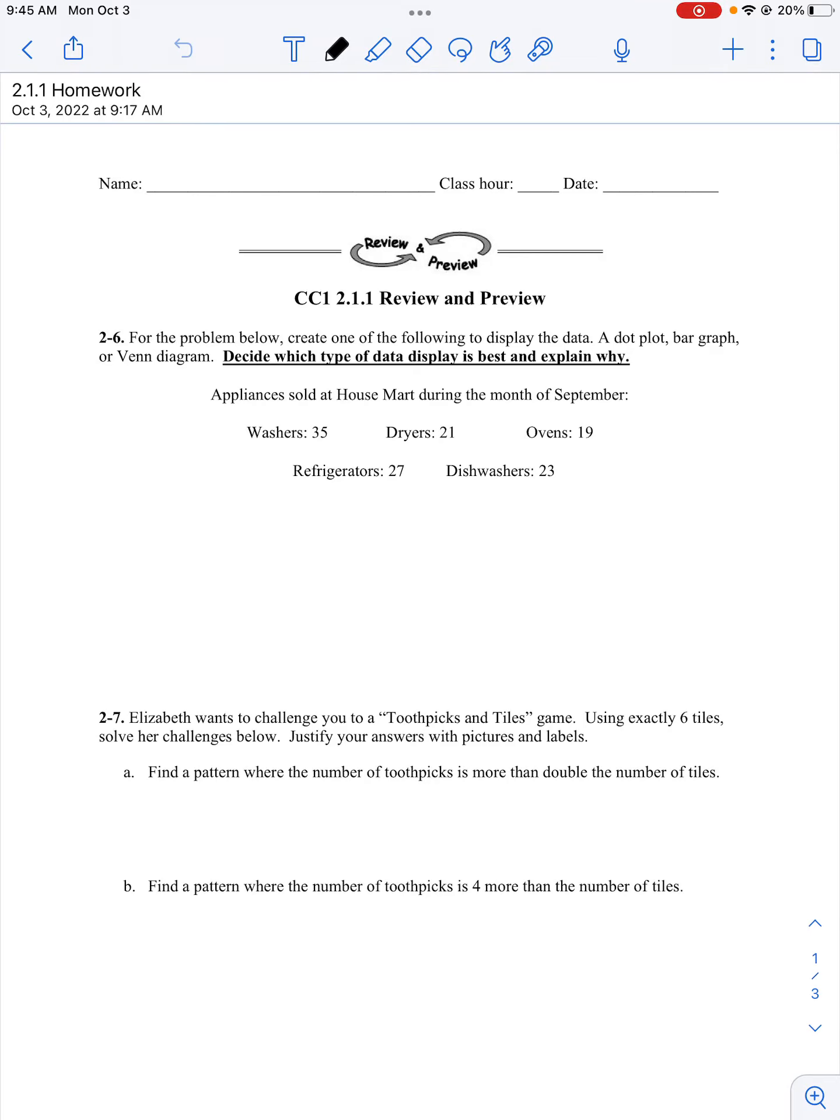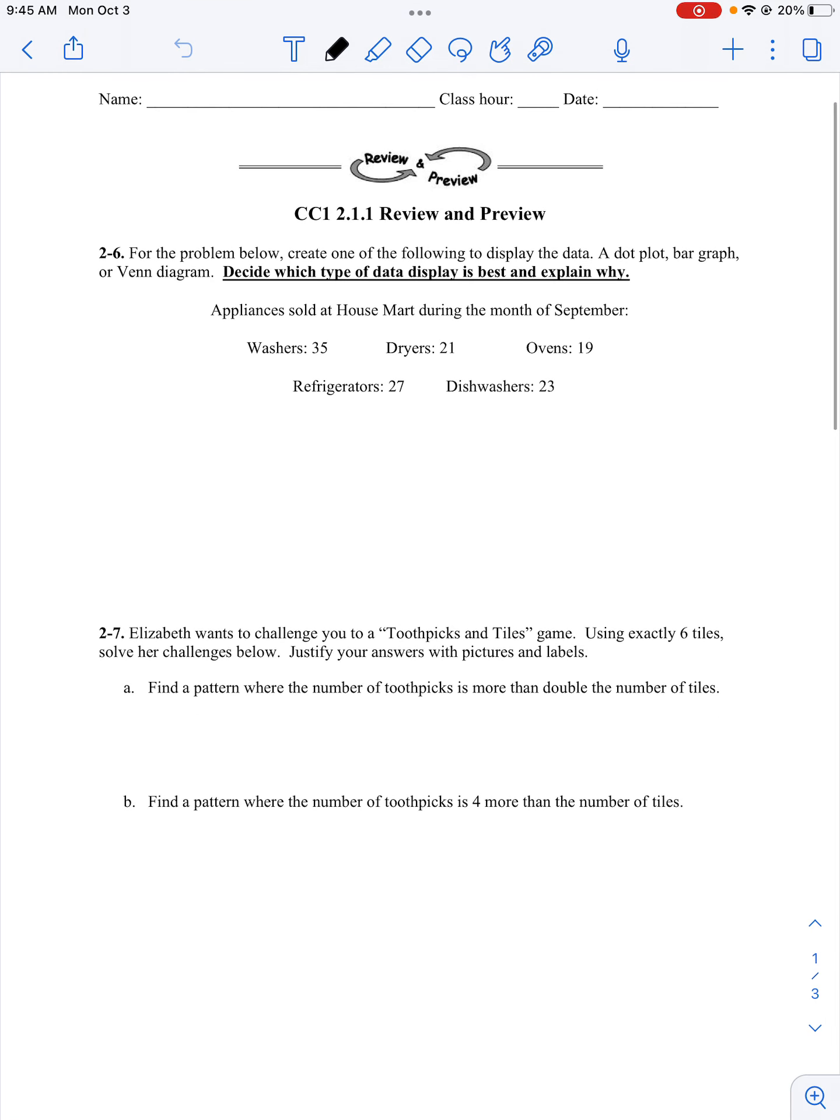Okay, today we are going to look at CC1 2.1.1. We're officially in chapter 2. For problem 2.6, for the problem below, create one of the following to display the data: a dot plot, a bar graph, or a Venn diagram, and then we need to decide which type of data display is best and explain why.